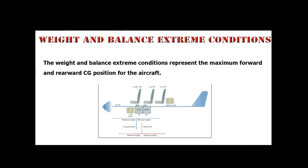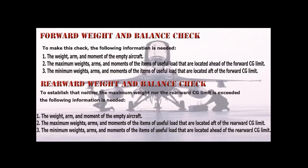Weight and Balance Extreme Conditions: These represent the maximum forward and rearward CG positions for the aircraft. For the forward weight and balance check, the following information is needed: (1) the weight, arm, and moment of the empty aircraft; (2) the maximum weights, arms, and moments of items of useful load located ahead of the forward CG limit; and (3) the minimum weights, arms, and moments of items of useful load located aft of the forward CG limit.